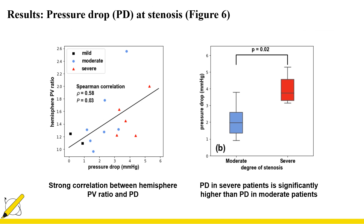The pressure drop at the stenosis is plotted versus the peak velocity ratio as a global consequence of the lesion. Pressure drop has a significant positive correlation with peak velocity asymmetry in these patients. Data points were colored based on stenosis degree, and pressure drop increases from mild to moderate and severe stenosis. Pressure drop was significantly higher in the severe subgroup compared to moderate stenosis patients.